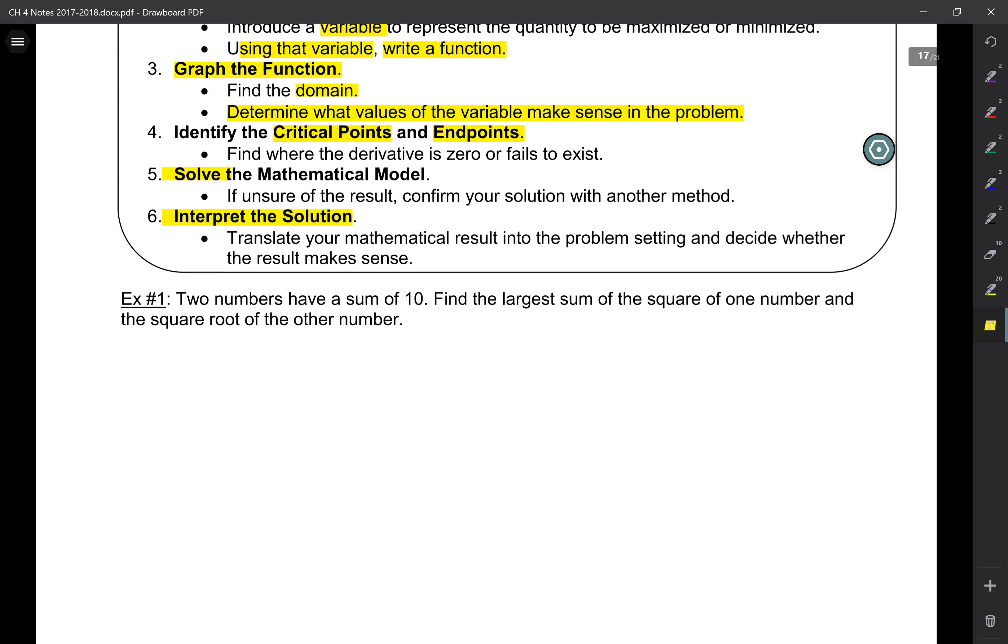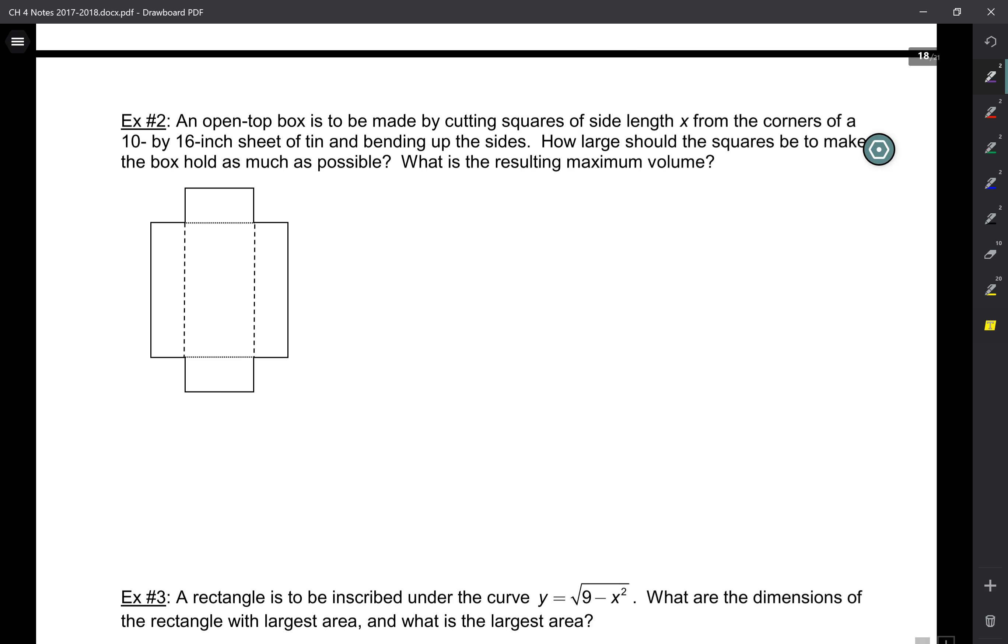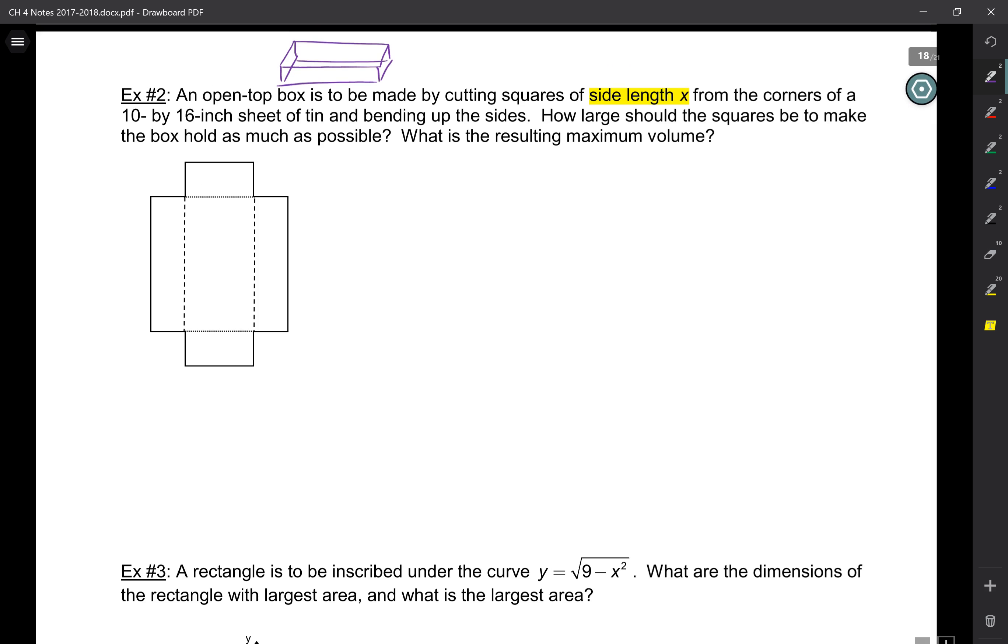So we're going to start with this one. An open top box is to be made by cutting squares of side length X from the corners of a 10 by 16 inch sheet of tin and bending up the sides. So, we cut it the way it's shown here, and then you bend up the sides, and you have an open top box that looks like this.